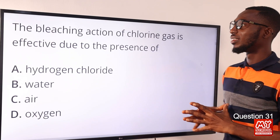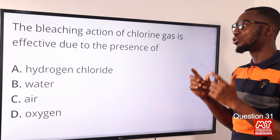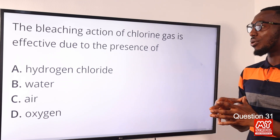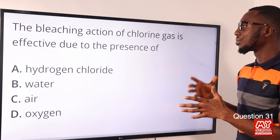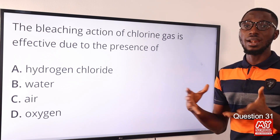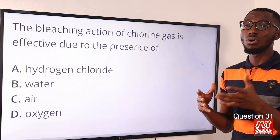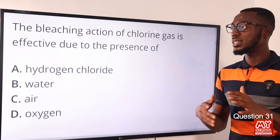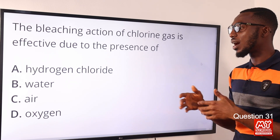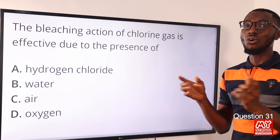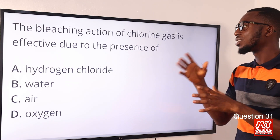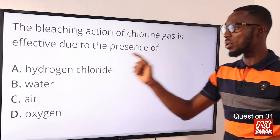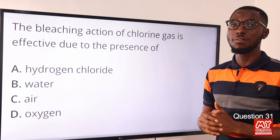Question 31. The bleaching action of chlorine gas is effective due to the presence of water. The bleaching ability is due to the interaction chlorine has with water to produce oxochlorate 1 acid. This acid is unstable — it decomposes and releases oxygen. This oxygen oxidizes the dye to form a colorless compound. So the bleaching action of chlorine gas is effective due to the presence of water. The correct option here is option B for water.